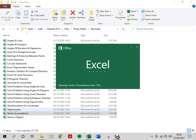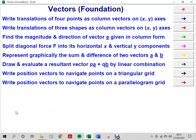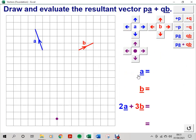This is a macros-enabled Excel spreadsheet, and I'm looking for Draw and Evaluate a Resultant Vector, PA plus QB, Bilinear Combination. This is an interactive diagram representing two vectors, A and B, on a lattice grid, or centimeter-squared paper, if you prefer.